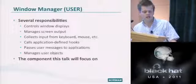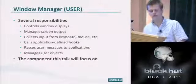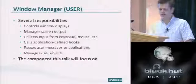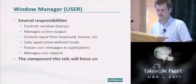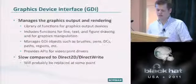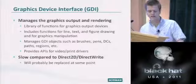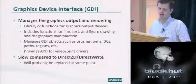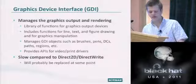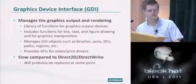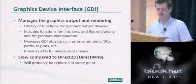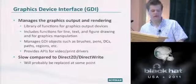The window manager's primary responsibility is to control window displays — it manages screen output, collects input from keyboard and mouse, calls application-defined hooks, passes messaging between applications, and manages user objects. The GDI or graphics device interface manages raw graphics output. It has a library of graphics functions including line, text, and figure drawing, as well as GDI objects like brushes, pens, DCs, paths, and regions, plus APIs for video and print drivers.